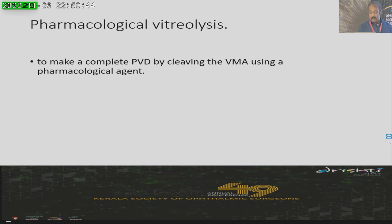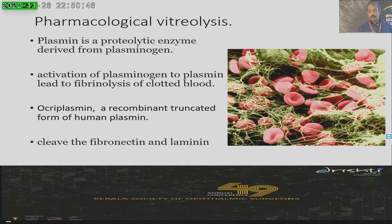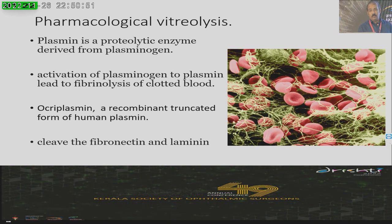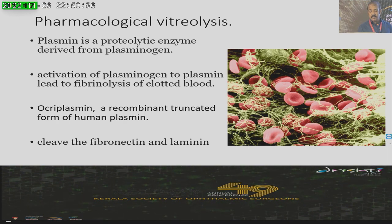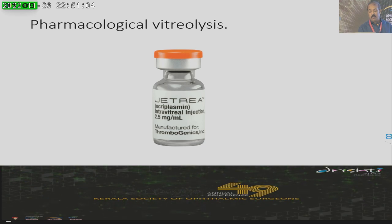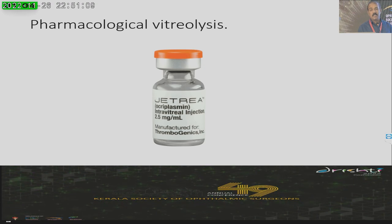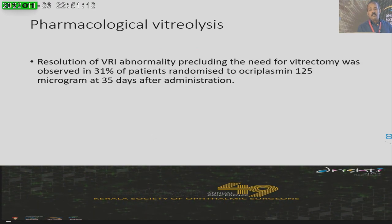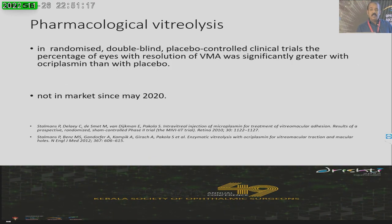Pharmacological vitreolysis is possible. Plasmin is an enzyme present in the human body important for clot lysis. Ocriplasmin is a human recombinant plasmin given intravitreally for vitreolysis — it was manufactured by Thrombogenics and was being marketed by Alcon in America and the European Union, but was not available in India. They have withdrawn it from the market in 2020, so it is no longer available, and we are left doing vitrectomy only.